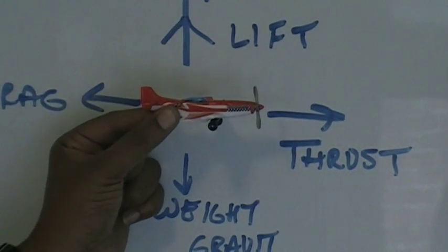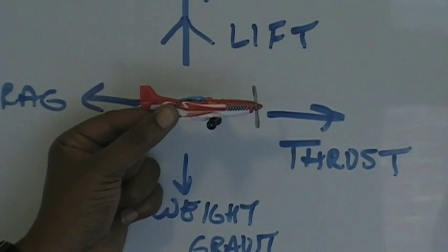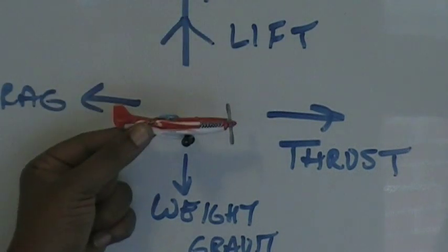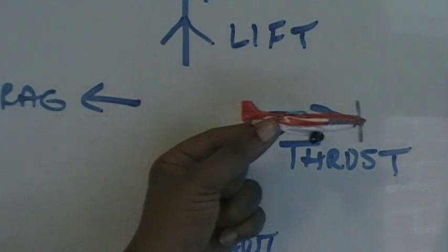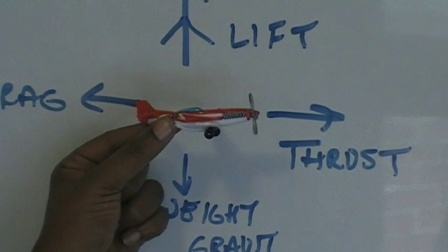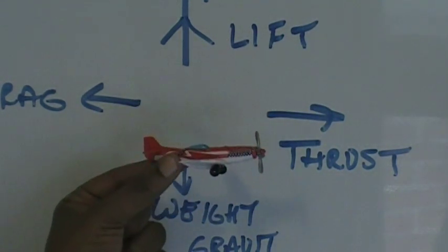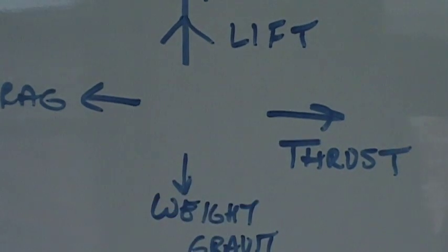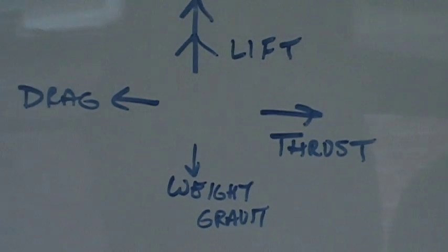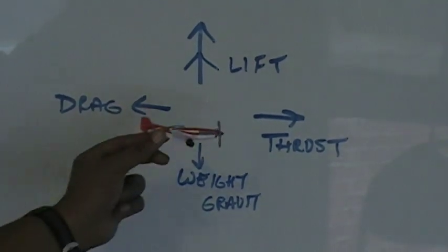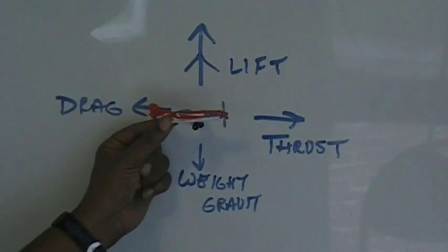So here is our airplane in the middle and those are the forces. We have drag which is our rearward force. We have lift which is the upward force. Thrust produced by the power plant is our forward force. And weight or gravity is our downward force. So let's pull up a little bit so we can see a little bit better. So those are the four forces of flight.